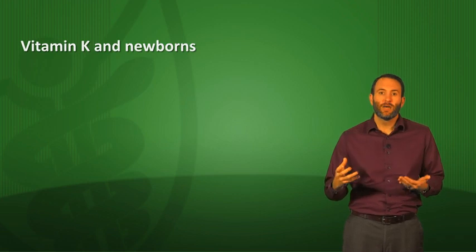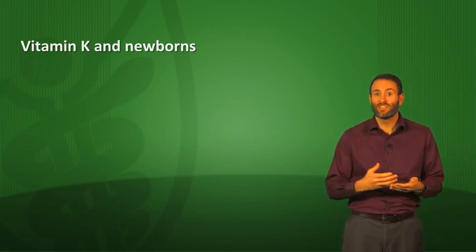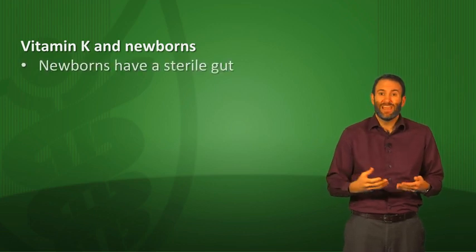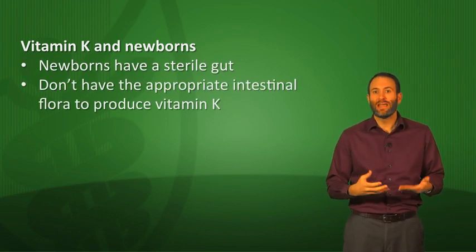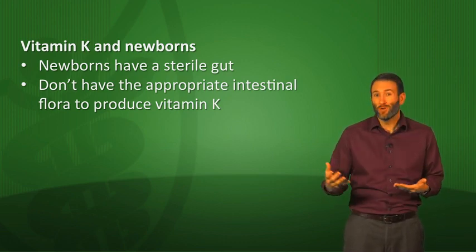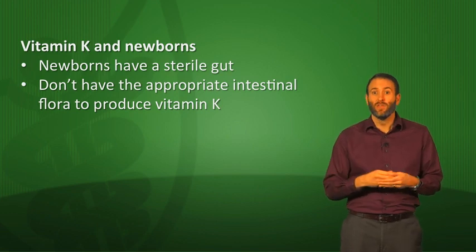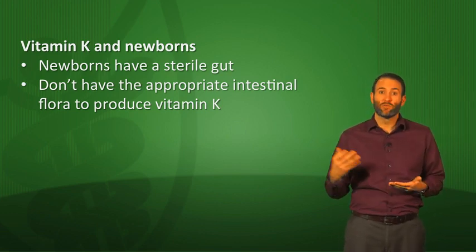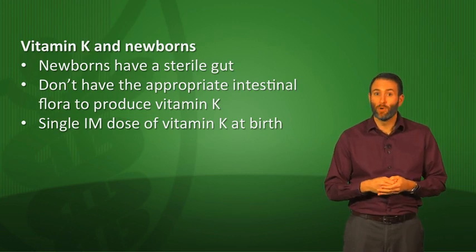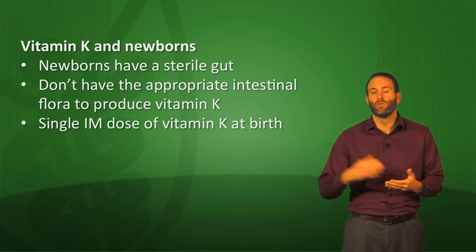A high-yield topic is the relationship between vitamin K and newborns. Newborns can have problems with hemorrhage because they have a sterile gut, meaning they lack intestinal flora to produce vitamin K. Breast milk only provides about a fifth of the needed vitamin K. It's recommended that newborns receive a single intramuscular dose of vitamin K at birth, which should carry them over until they have enough gut bacteria to produce their own vitamin K.